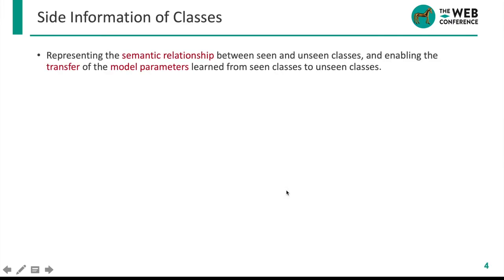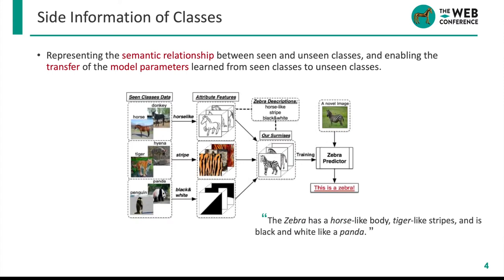The key to solving the ZSL problem is to utilize some side information about classes. In the example of animal classification, it can be a sentence like: the zebra has a horse-like body, tiger-like stripes, and is black and white like a panda. This kind of side information models the semantic relationships among classes, based on which the model parameters learned from horse, tiger, and panda can be transferred to zebra.